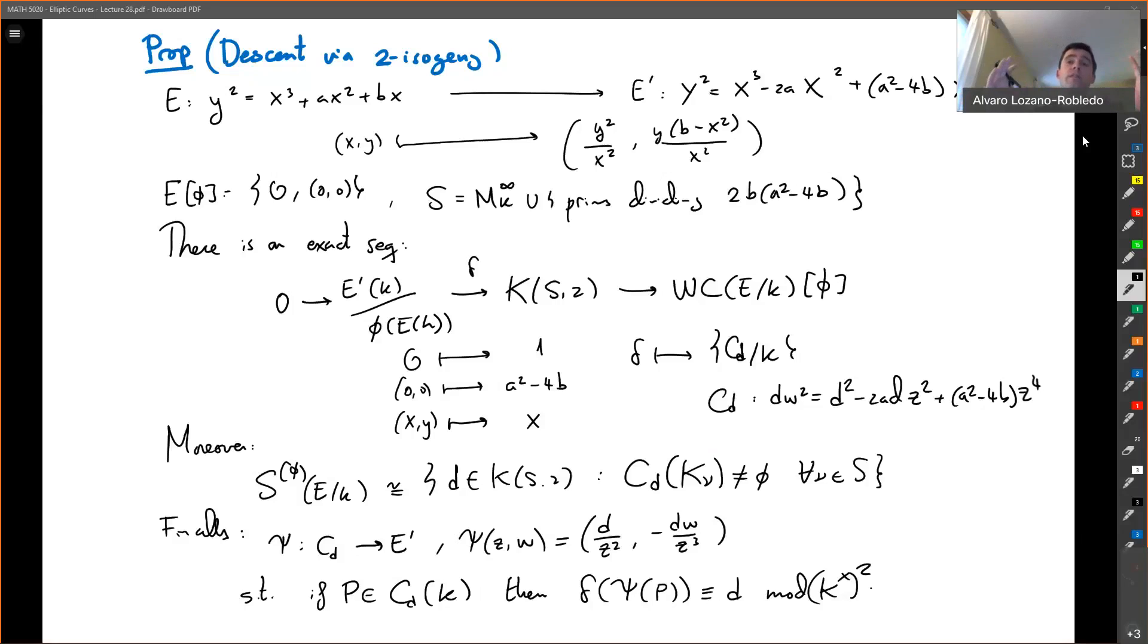From that, we extracted a short exact sequence between the Mordell-Weil groups, H1s going into E5 and H1s going into E. There we realized that we can define a Selmer group, which gives us cohomology classes that are locally that map to a trivial class in some cohomology group locally.